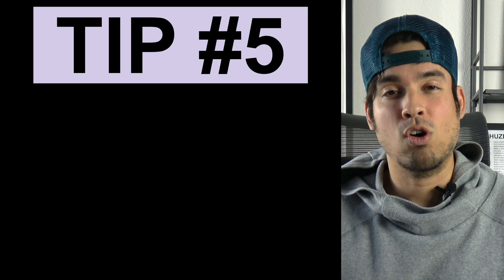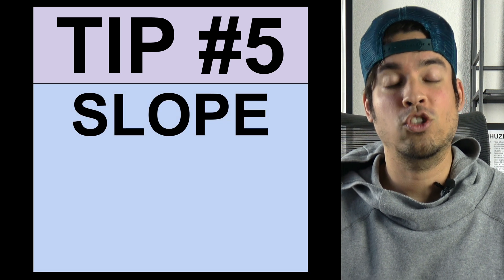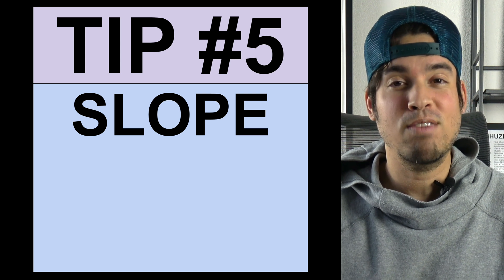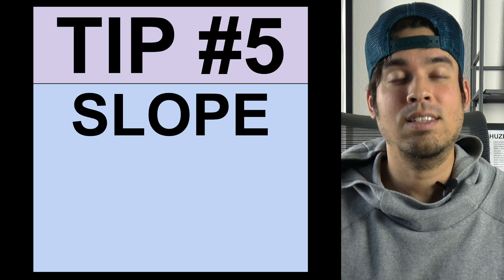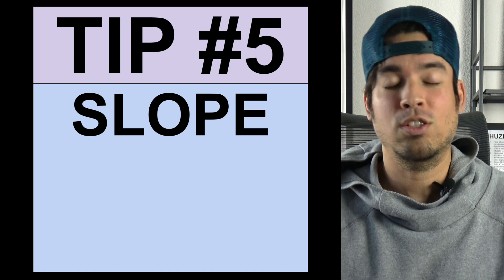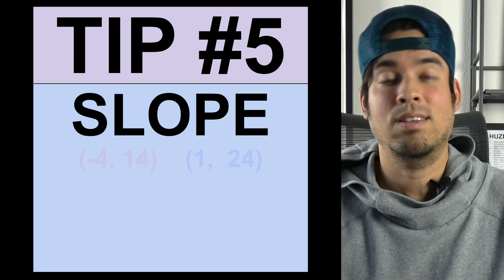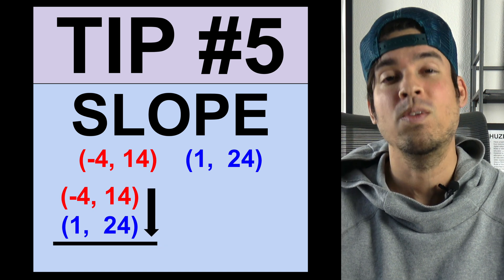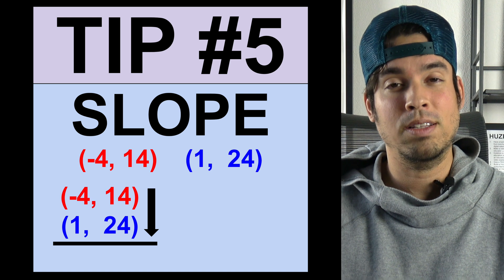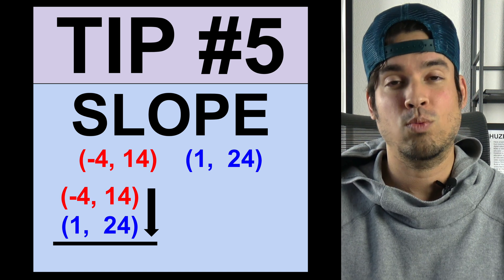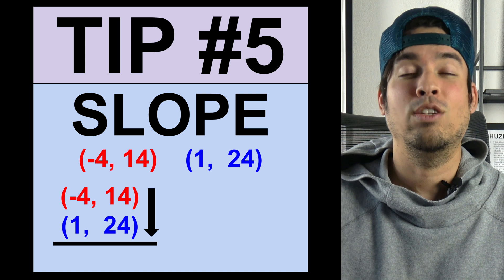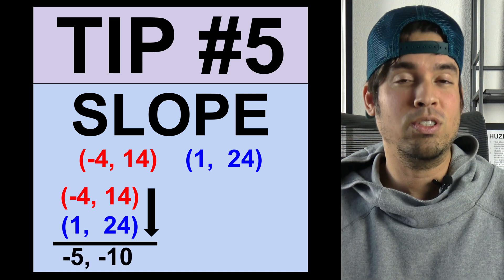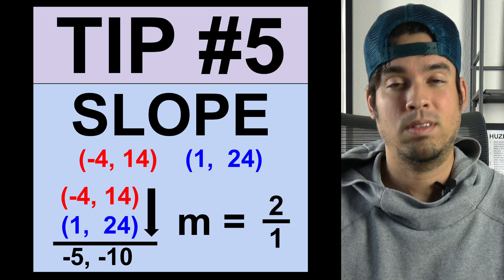Tip number five is all about slope of linear equations when you're given two coordinates. I don't like the slope formula because it unnecessarily requires you to memorize all of these terms and numbers. Instead, stack them and subtract them down. If you have two coordinates and you're trying to find the slope, you stack the coordinates one on top of the other and you subtract down — first subtract the y's, place that difference on top of the difference of the x's, and you're done.